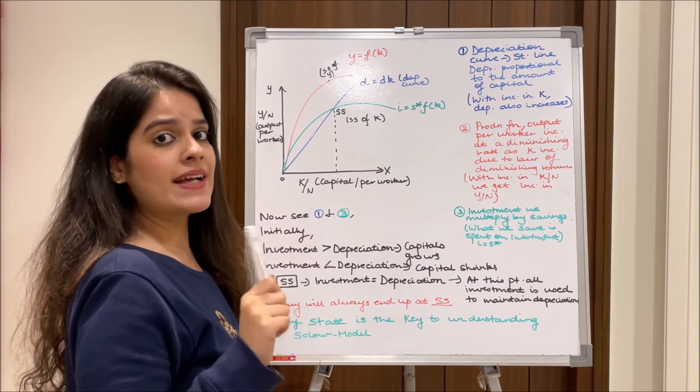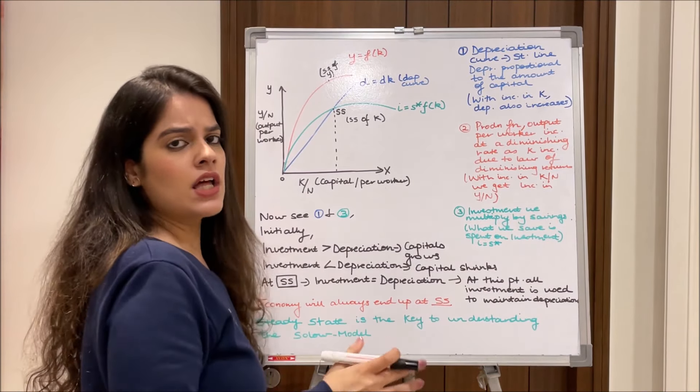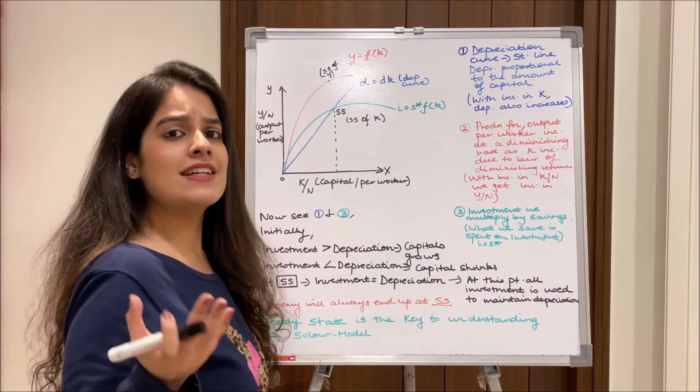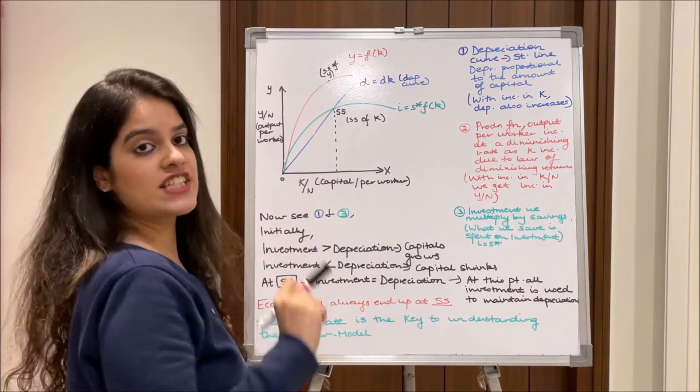Isn't that obvious? Think again, when the capital per worker is increasing the output per worker is definitely going to increase and that is why we have this red line.